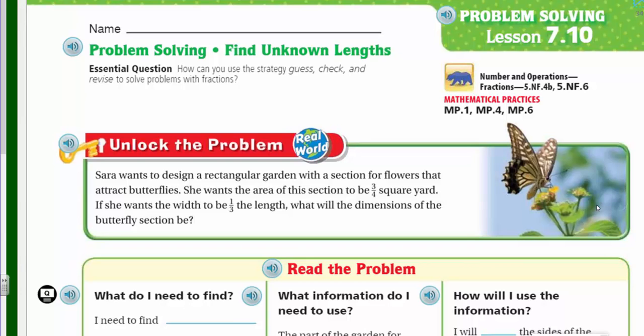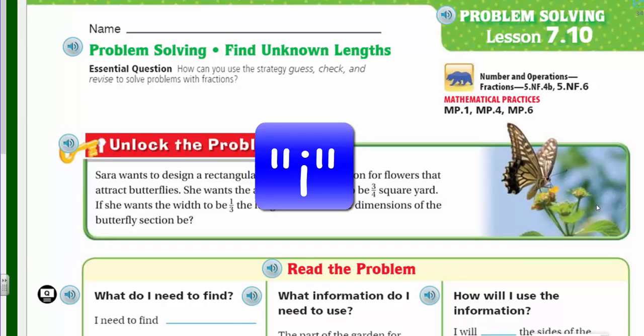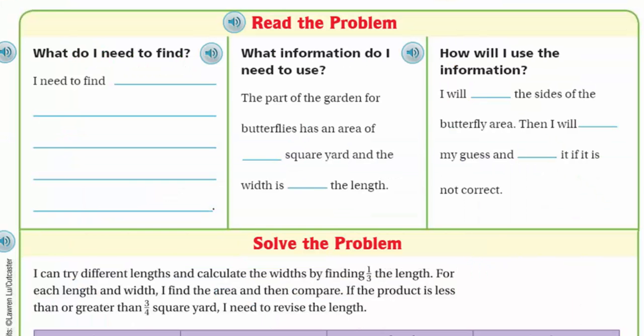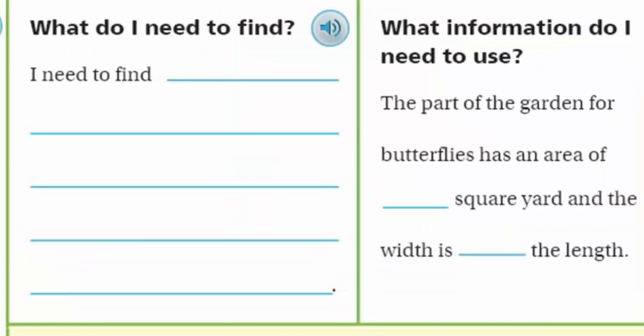I could divide the area by the length to find the width, because length times width equals area — then area divided by the length is going to give me the width. Let's read the problem again. What do I need to find? They want to know the dimensions of the butterfly garden, because we have the area. She wants the area section to be three-fourths square yard, and she knows the width to be one-third the length. So we need to know what the dimensions are of the butterfly section.